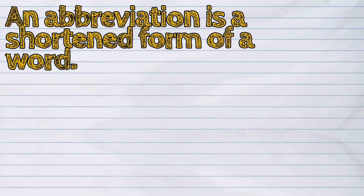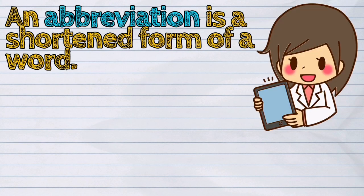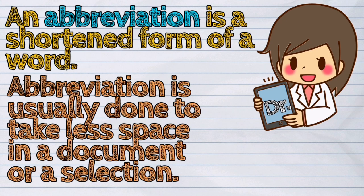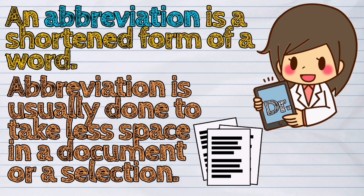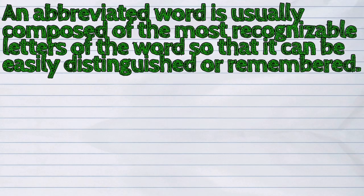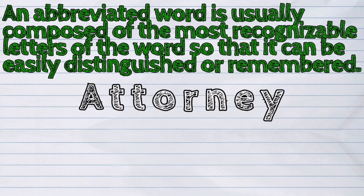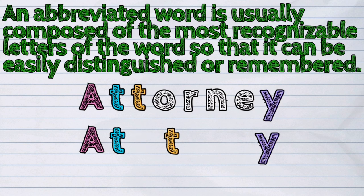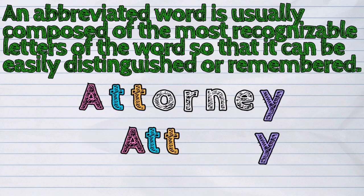An abbreviation is a shortened form of a word. Abbreviation is usually done to take less space in a document or a selection. An abbreviated word is usually composed of the most recognizable letters of the word, so that it can be easily distinguished or remembered.